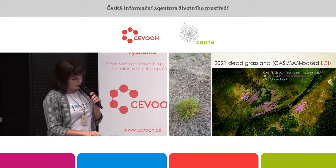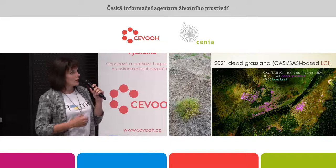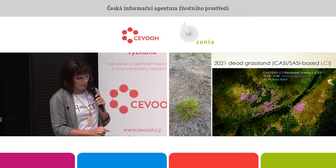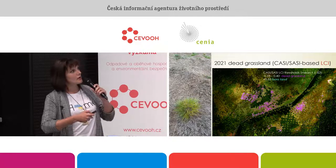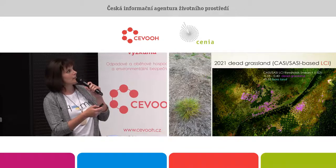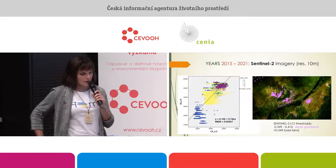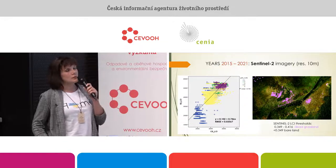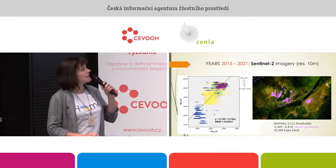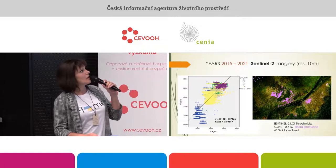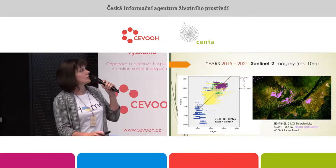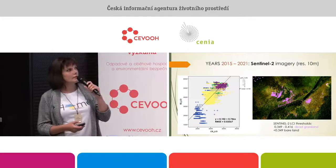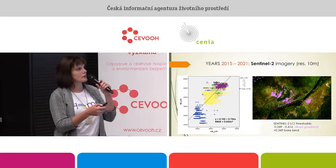Here you can see a fragment of our map showing the location of dry grassland displayed in purple color. This is up-to-date data for the previous year. For retrospective analysis from 2015 until now, we used Sentinel-2 imagery with the same LCI index, after performing correlation and regression analysis to transfer values from one sensor to another. This is the result based on Sentinel-2 imagery.